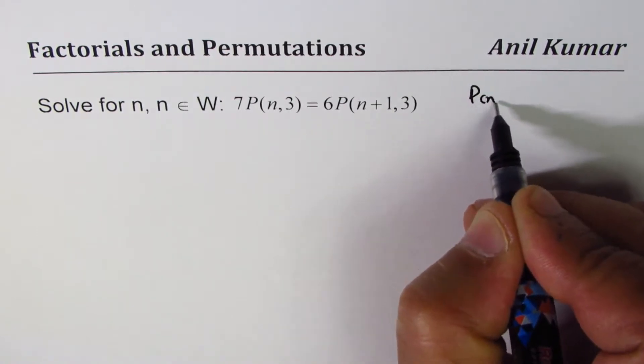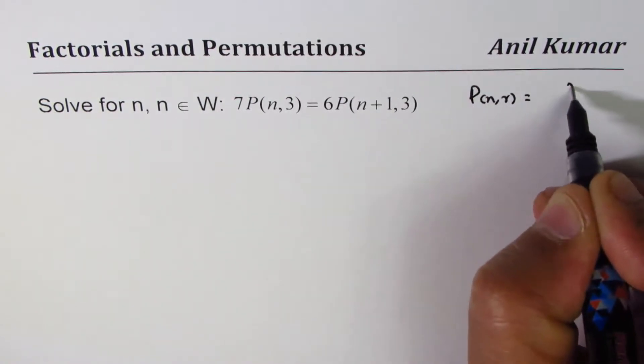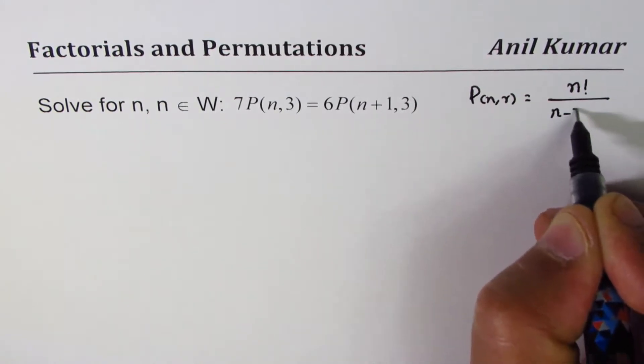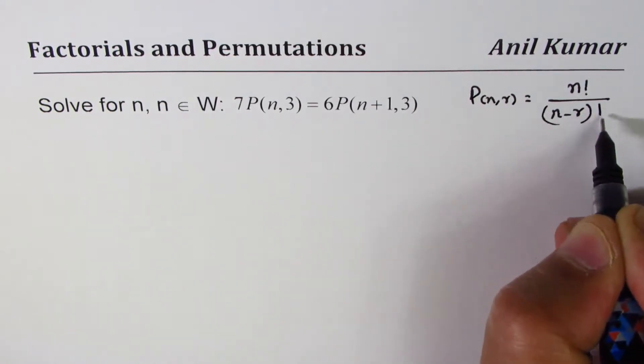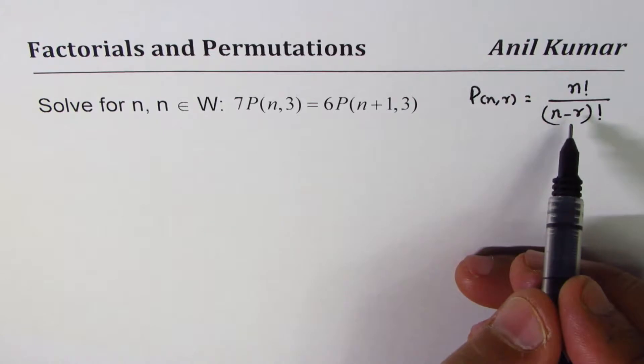As you know, P(n,r) equals n factorial divided by (n minus r) factorial. We'll use this formula to find the value of n in this particular equation which involves permutations.